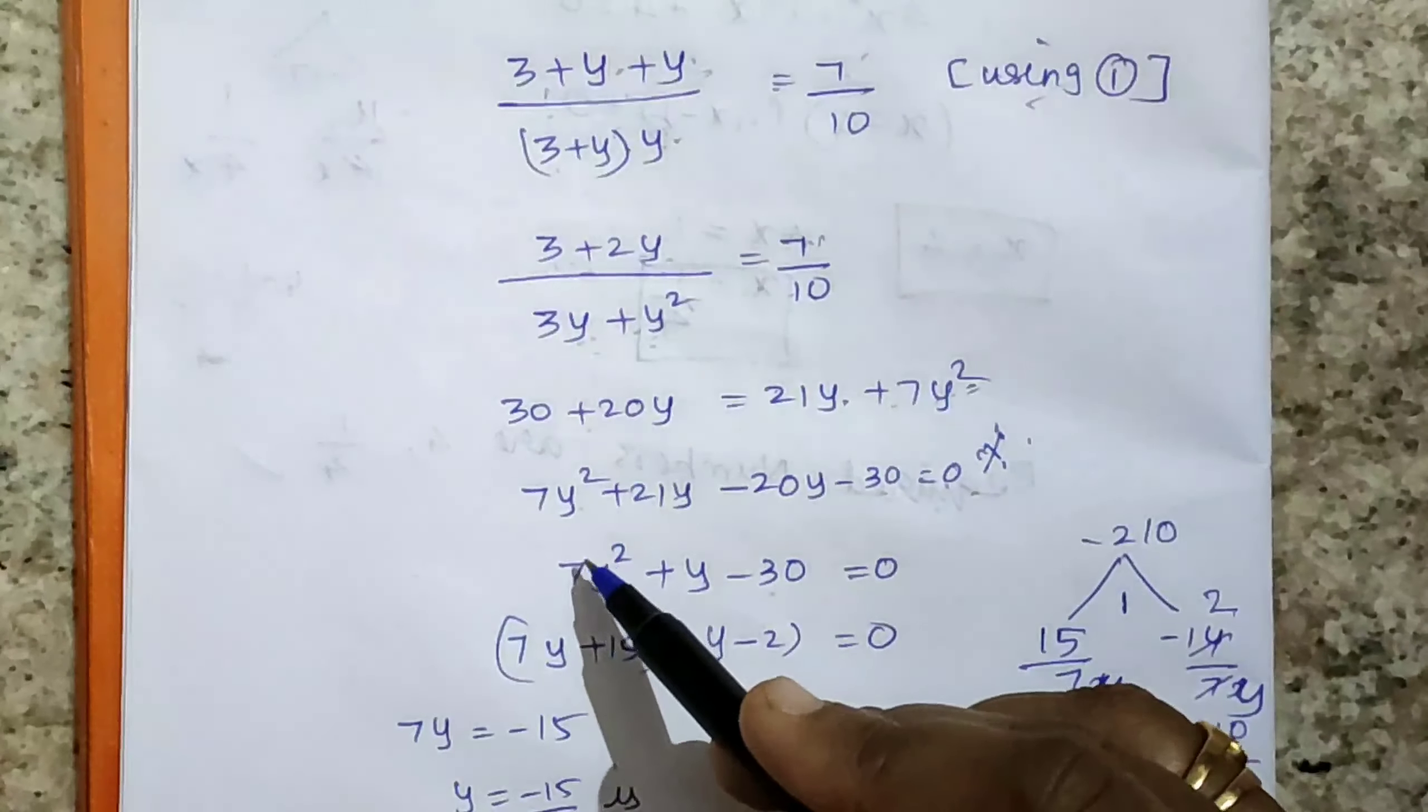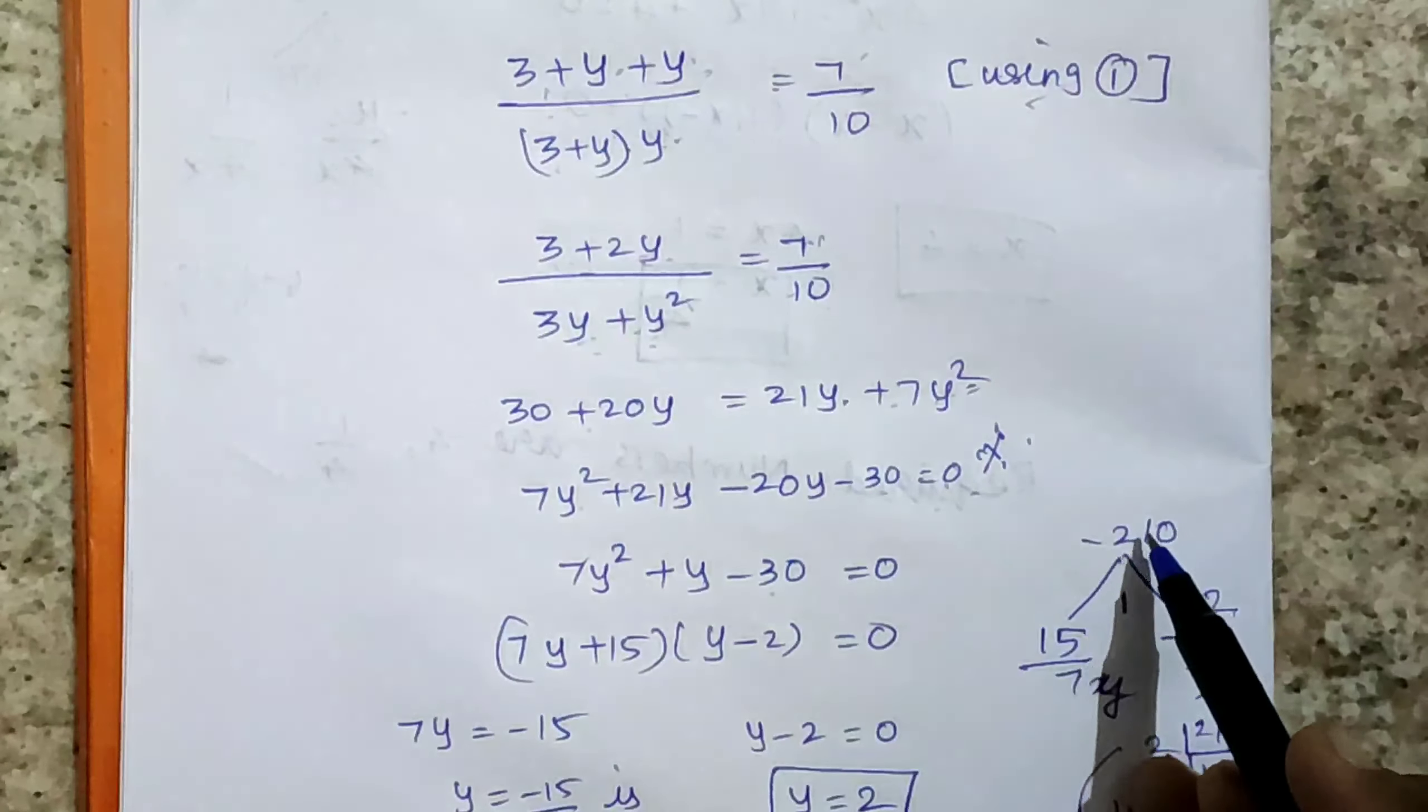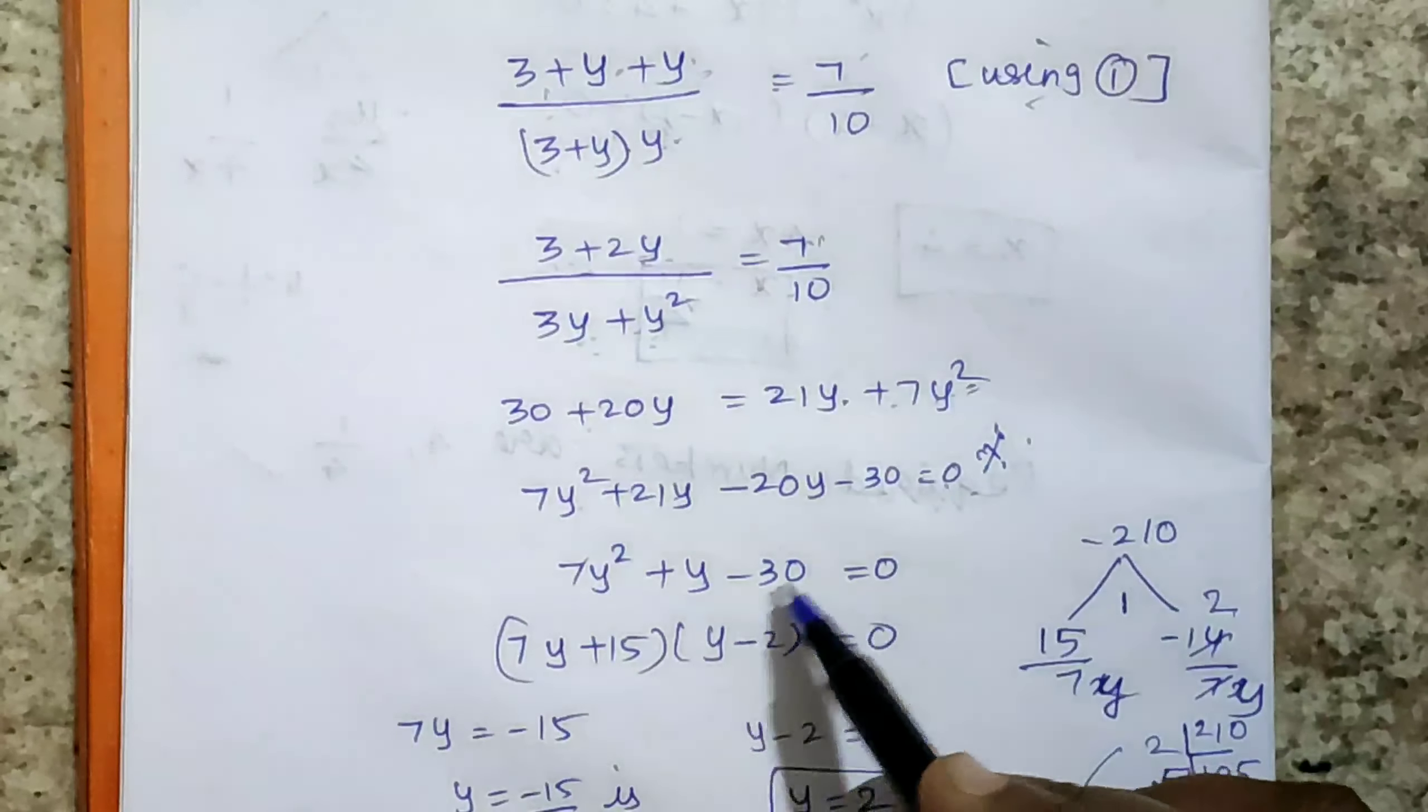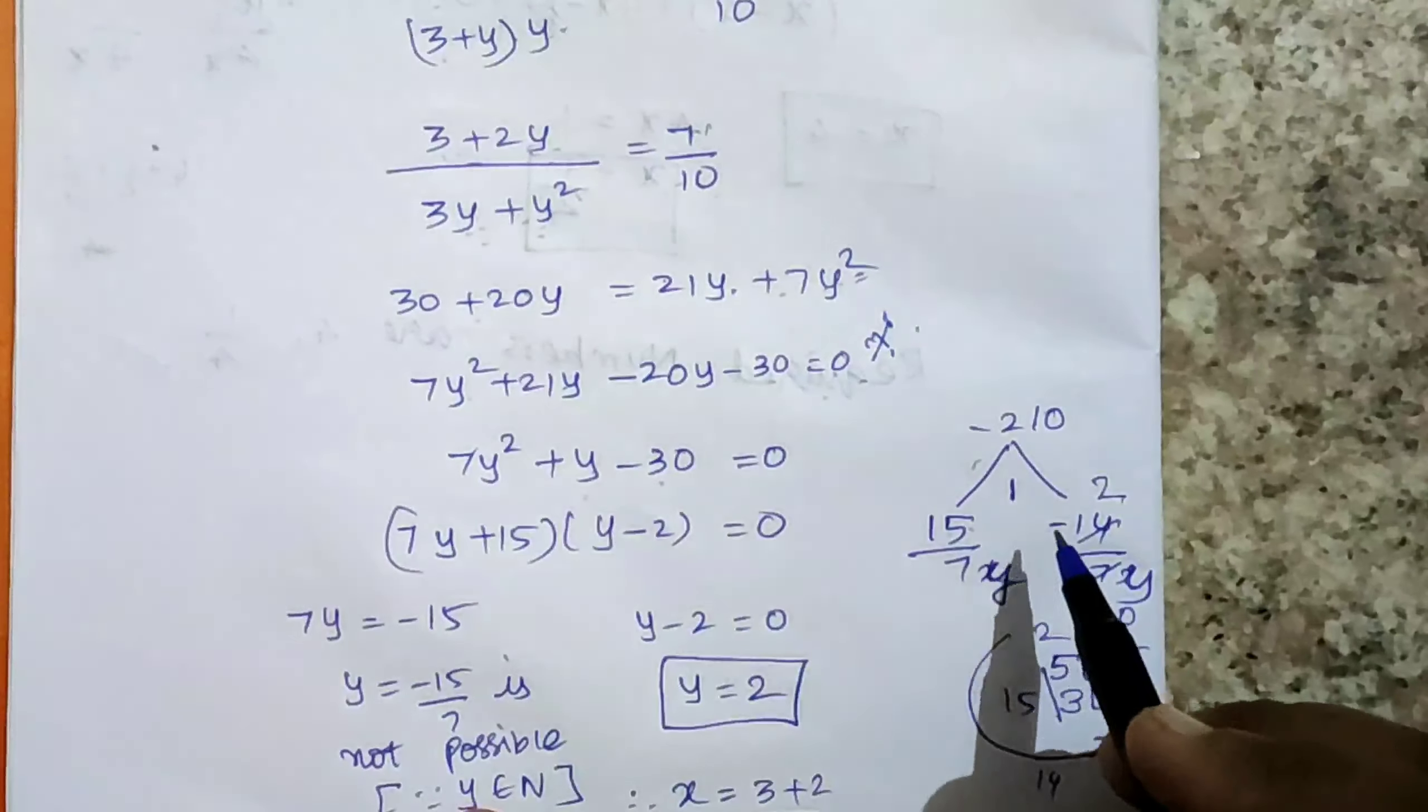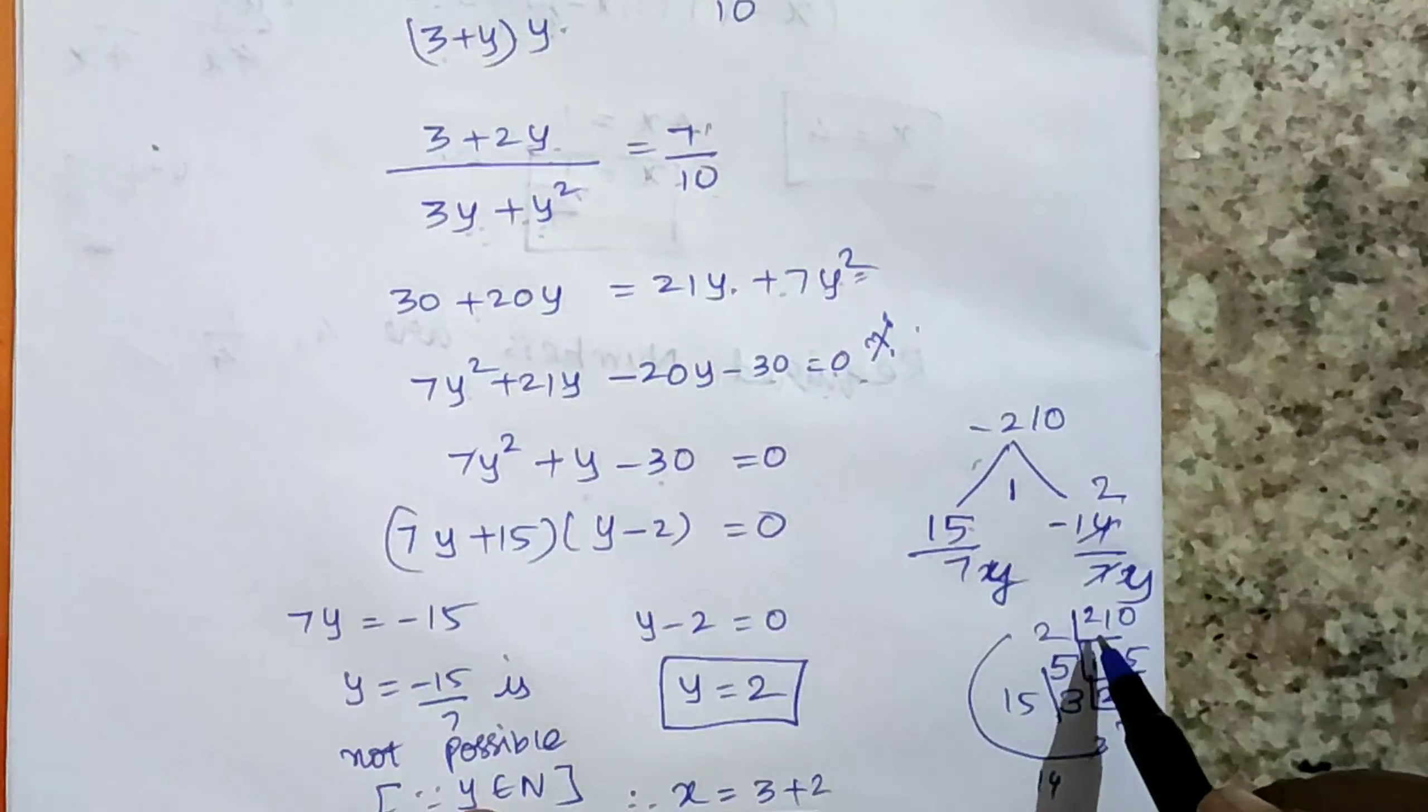Now we have to factorize this. 7 times minus 30 is minus 210. Here the coefficient of the central term is 1, so the number is very easy. We can do prime factorization.